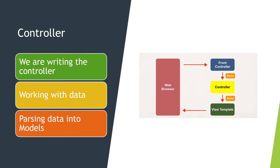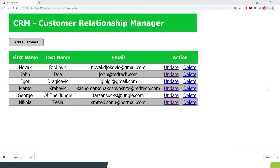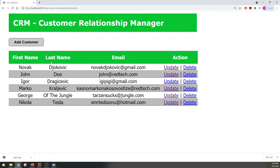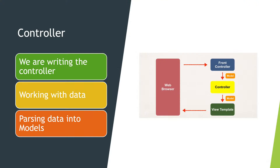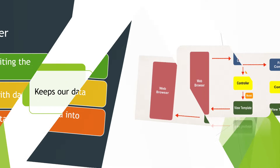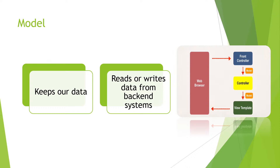Now let's talk about the controller. The controller is our logic, our implementation — we are writing the controller. When the front controller delegates some requests to us, we need to know what to do with a certain request, how to process it. For example, in our list customers app — if somebody gives us a request to delete someone, we need to delete that. We need to write some method, some logic behind it in order for all this to work. A controller is also parsing data into models.